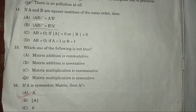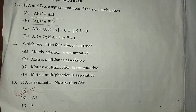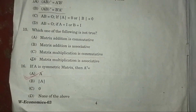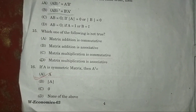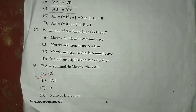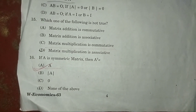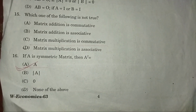Question 15: Which of the following is not true? Answer: Matrix multiplication is commutative. Question 16: If A is a symmetric matrix, then — answer: A = A'.